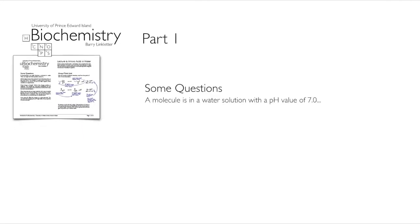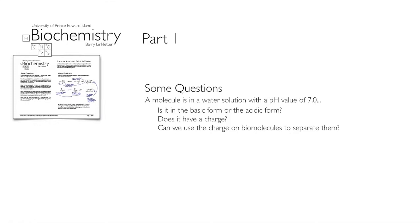I have some questions for you. Imagine you've got a solution and you have set the pH to 7.0. If you had a molecule in that solution, is it in its basic form or its acidic form? Anything that can be ionized might have an extra proton and be positively charged, might be neutral, or maybe it's lost a proton and is now negatively charged. Which is it? Understanding the charge on amino acids at various pH values is going to be important. Are they charged, and what is the charge? If a biomolecule is charged, we might be able to use that to separate them from other biomolecules — if they've got different charges, we will be able to separate them.